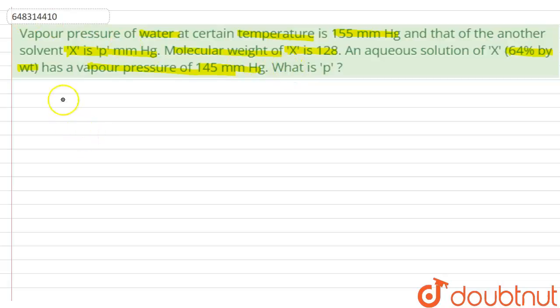The vapor pressure of water, P°A, is equal to 155 mmHg. And the vapor pressure of solvent, P°B, is equal to P mmHg.